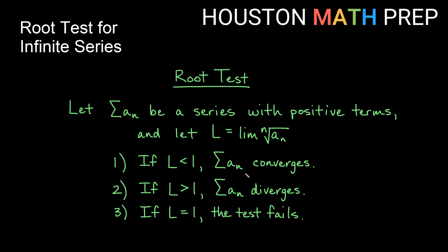If our limit is less than 1, then our original series converges. If it's greater than 1, we get that it diverges. And a limit of 1, just like the ratio test, means the test fails and we'll have to revert to some other test to actually figure out convergence or divergence for our series.